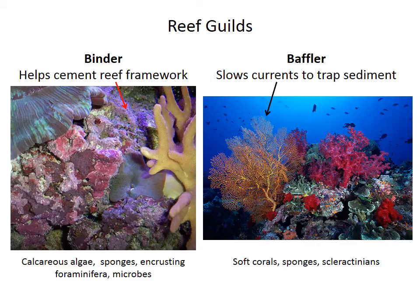But reefs also have a couple other types of groups that are very important. The binder guild are ones that help cement the reef together. In modern reefs, these are things like algae, and microbes, and foraminifera,